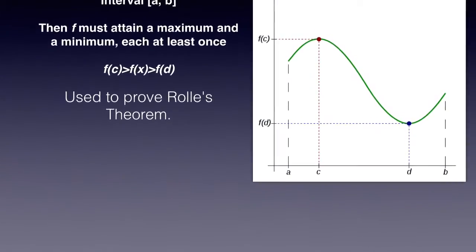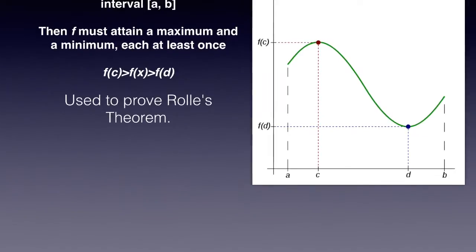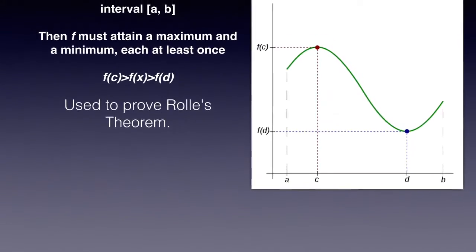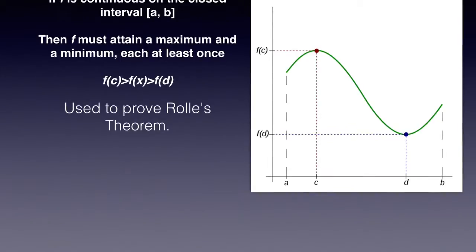If function f is continuous on the closed interval a to b, then function f must attain a maximum and a minimum, each at least once. Used to prove Rolle's Theorem.